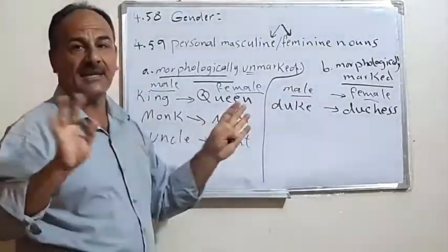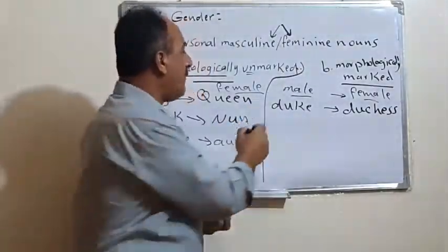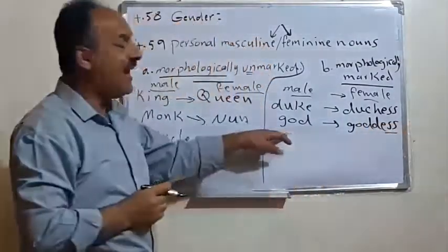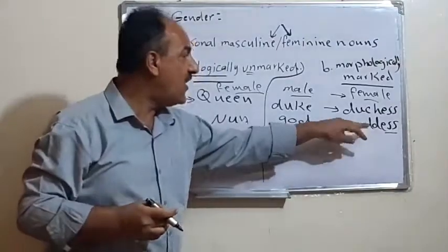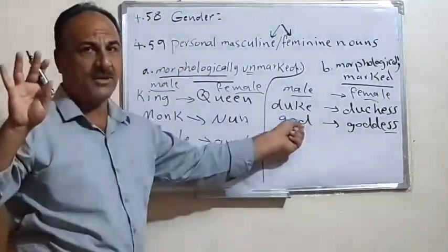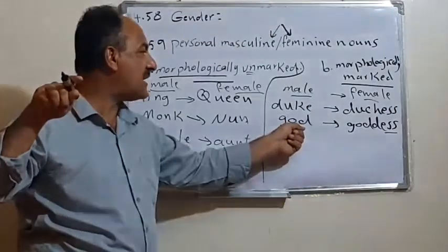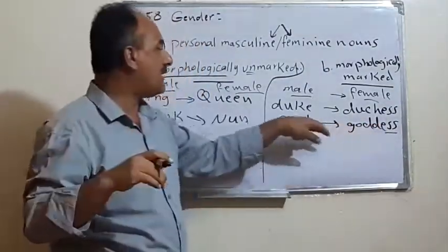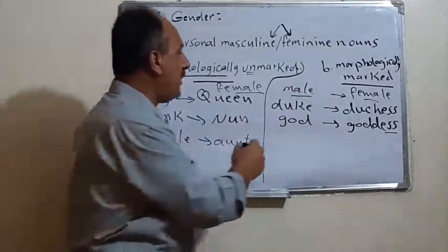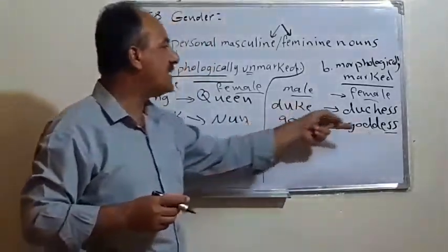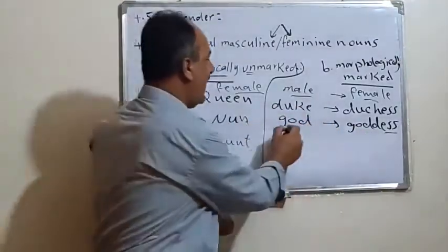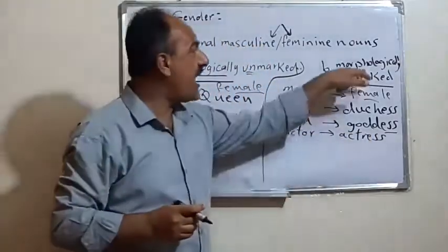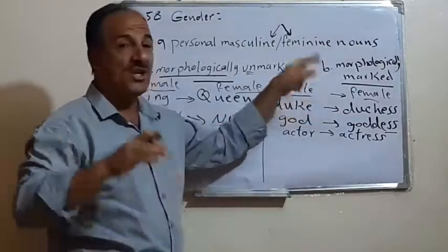More examples of morphologically marked words: 'host' becomes 'hostess', 'steward' becomes 'stewardess', 'actor' becomes 'actress'. We can clearly see the relation between these pairs — the feminine is derived from the masculine by adding a suffix. That is why we call these morphologically marked, unlike 'king' and 'queen' which have no structural relation.